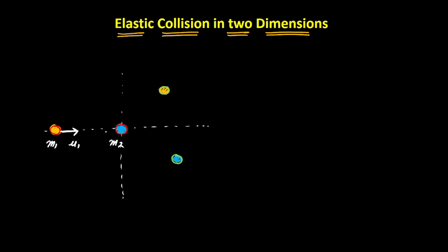Before collision, I am highlighting these with red colours; after collision, I am highlighting these with green colours. After collision, the first ball is moving with a velocity of v1 at an angle theta1 from the horizontal, and the second ball is moving with a velocity of v2 making an angle theta2 with the horizontal.